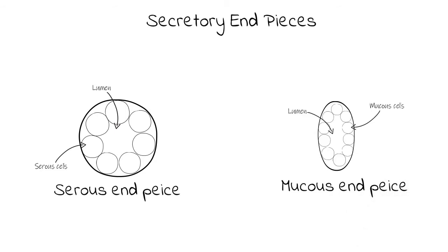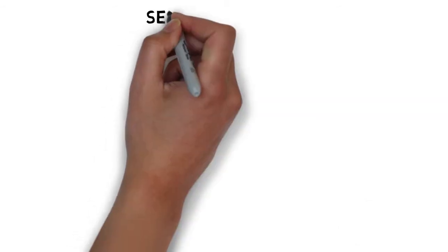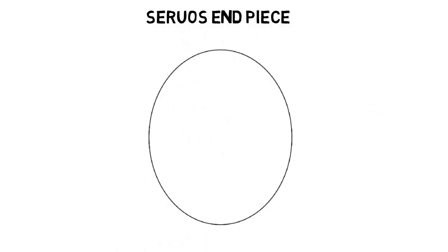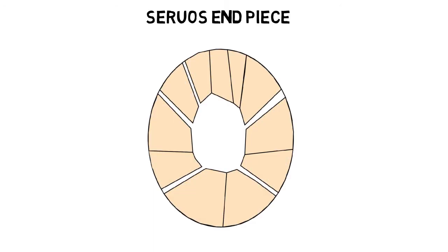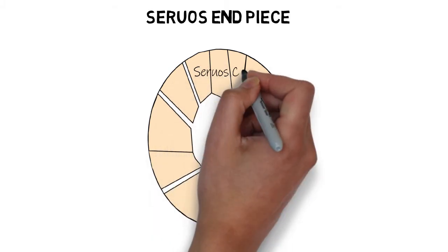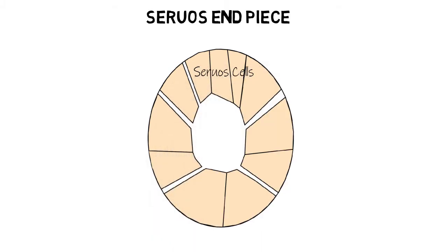The serous end piece is typically spherical in shape. Each end piece consists of about eight to ten cells surrounding a central lumen. These cells are typically pyramidal in shape, with the tips of the pyramid directed towards the central lumen.